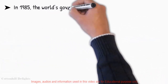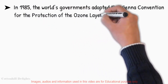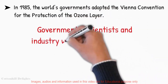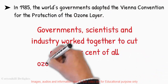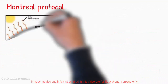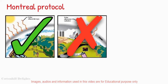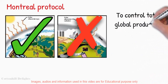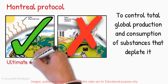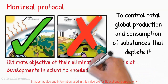In 1985, the world's governments adopted the Vienna Convention for the protection of the ozone layer. Under the Convention's Montreal Protocol, governments, scientists, and industry worked together to cut out 99% of all ozone-depleting substances. The principal aim of the Montreal Protocol is to protect the ozone layer by taking measures to control total global production and consumption of substances that deplete it, with the ultimate objective of their elimination on the basis of developments in scientific knowledge and technological information.